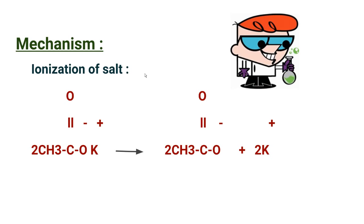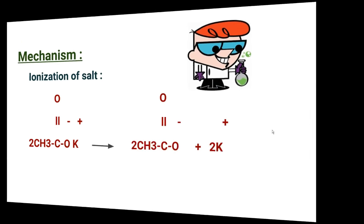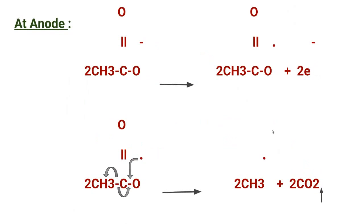The first stage is the ionization of the salt. The potassium salt of carboxylic acid dissociates into its respective ions — the acetate ion (negatively charged) and the potassium ion (positively charged, as potassium is an alkali metal). At the anode, the acetate ion migrates towards it because it is a negative ion attracted to the positive electrode.